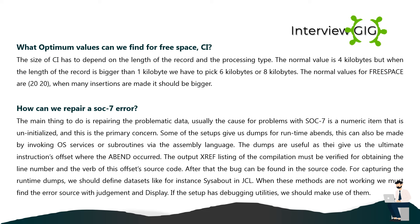What optimum values can we find for free space CI size? The size of the CI has to depend on the length of the record and the processing type. The normal value is 4 kilobytes, but when the record length is bigger than 1 kilobyte, we pick 6 or 8 kilobytes. The normal values for free space are 20/20; when many insertions are made, it should be bigger.